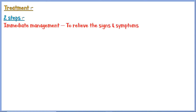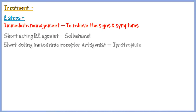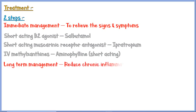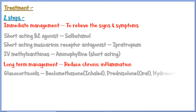Treatment includes two steps. Immediate management is aimed at relieving signs and symptoms. Drugs used include short-acting beta-2 agonists like salbutamol, short-acting muscarinic receptor antagonists like ipratropium, and intravenous methylxanthines like aminophylline. All of these drugs cause bronchial smooth muscle relaxation and dilate the airways. In addition, aminophylline has an anti-inflammatory action as well. Long-term management is aimed at reducing the chronic inflammatory reaction in the airways, for which patients are given glucocorticoids like beclomethasone, prednisolone, and hydrocortisone, and theophylline.